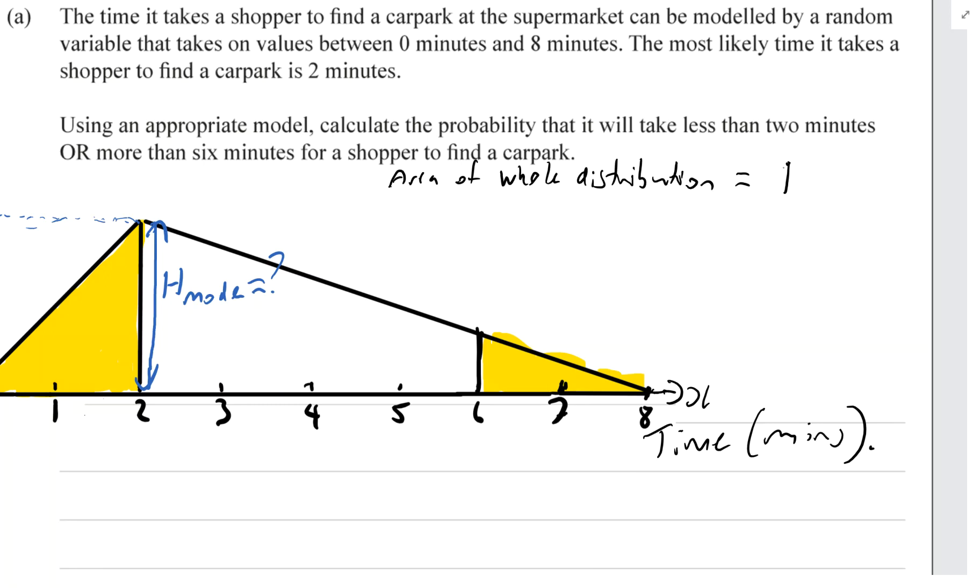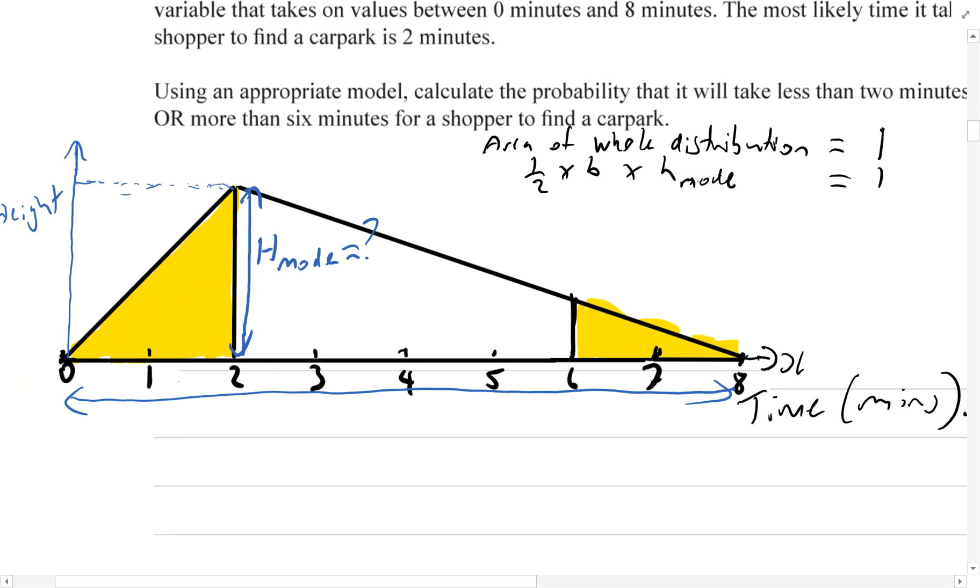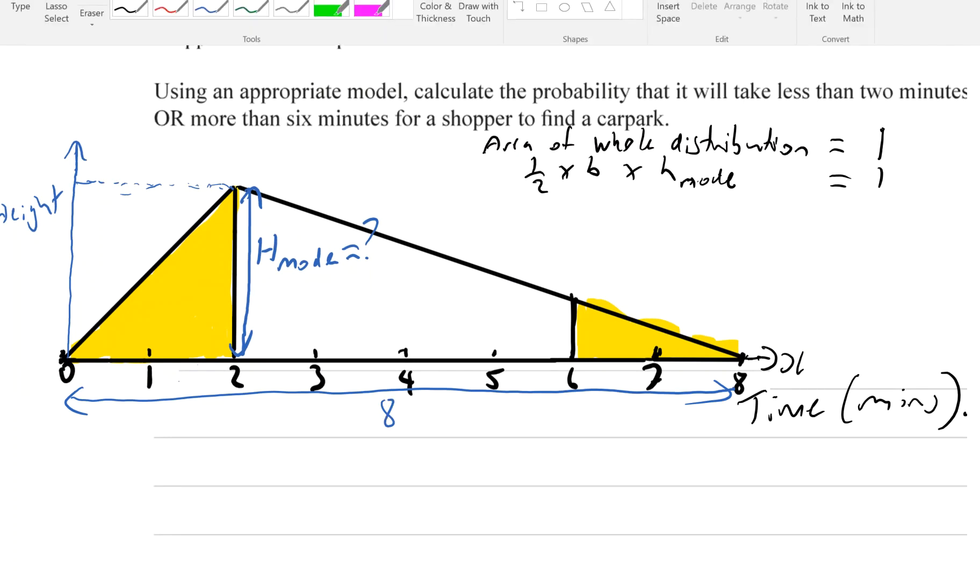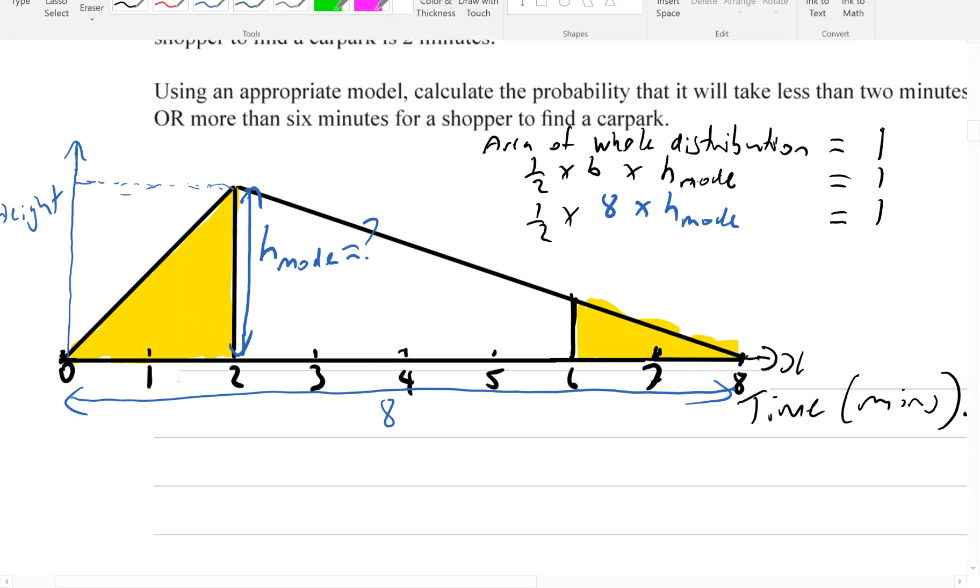We also know the area of a triangle is half times the base times the height. And when we talk about height, we're talking about the height at the mode, the height right at the peak. So that equals one. What's the base of this whole triangle? Well, in this case, it's eight. The base is eight. So let's write that in. We know that half times the base, eight, times whatever the height is equals one.